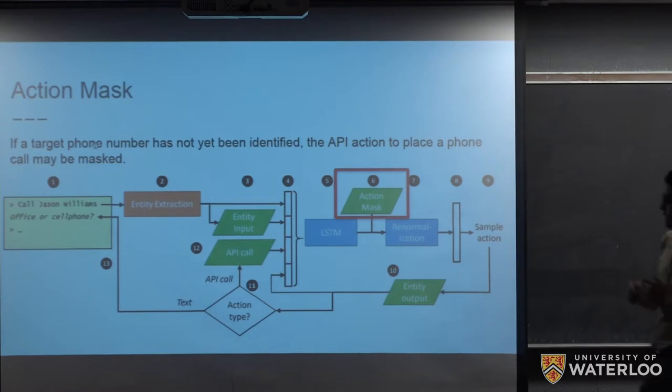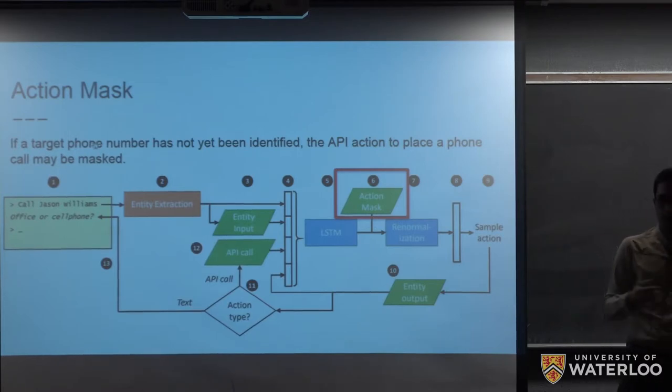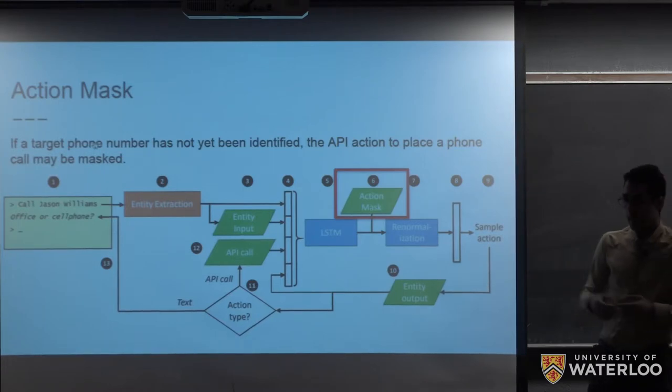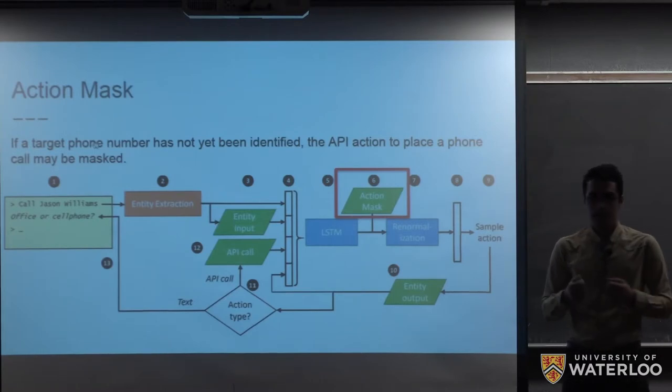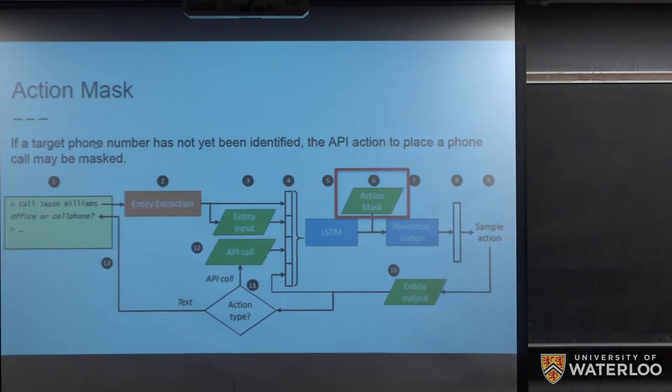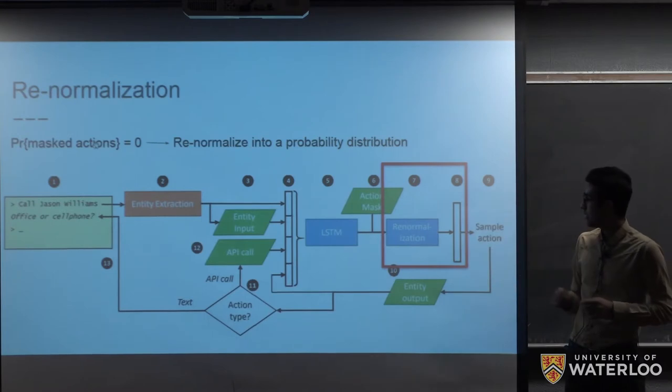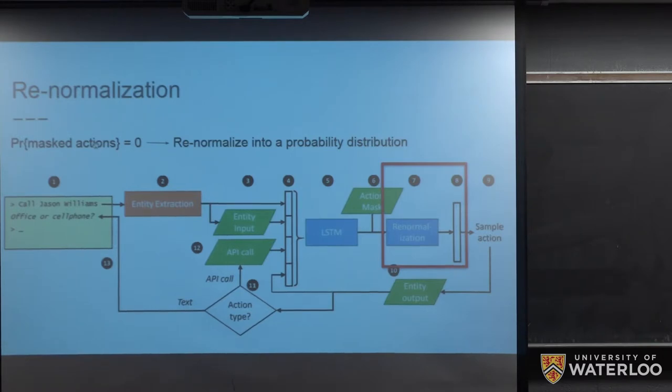In part six, we have an action mask, which is, again, a code provided by the developers. And the responsibility of this module is to mask some of the actions. For instance, if we couldn't find Jason Williams in the database, in that case, the action of initiating a phone call should be inactive. And they mask that action by putting the probability of that action to zero. In that case, we make sure that this action is not going to be selected in this time step. So here we can set the probability of that action to zero. And because of this change, the output is not a distribution anymore. So we need to renormalize that vector to have a distribution in part eight. So after renormalizing the output of the LSTM network, we would have a distribution over the available actions.